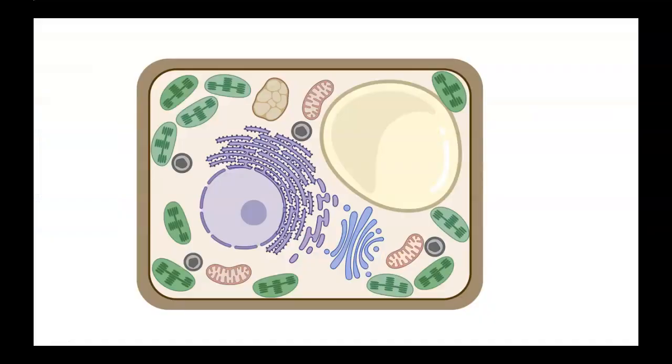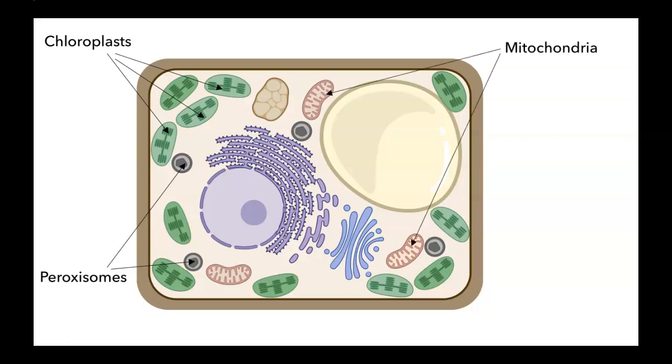This image shows a generic plant cell, and I'm going to use it to show the subcellular locations where proteins are sorted through post-translational mechanisms. These include chloroplasts, the site of photosynthesis, peroxisomes, that organelle involved in lipid metabolism and detoxifying reactive oxygen species, and mitochondria, the powerhouse of the cell, involved in many metabolic reactions.